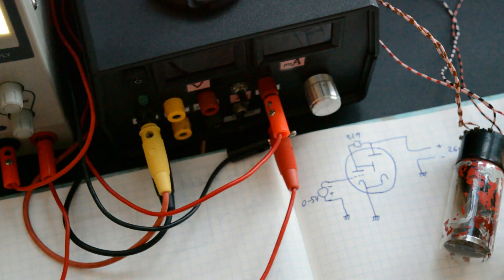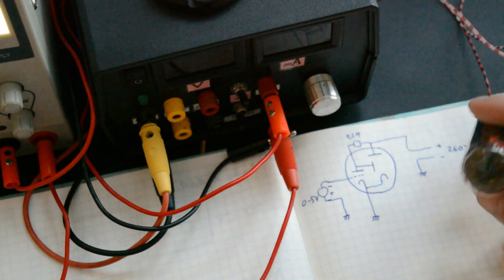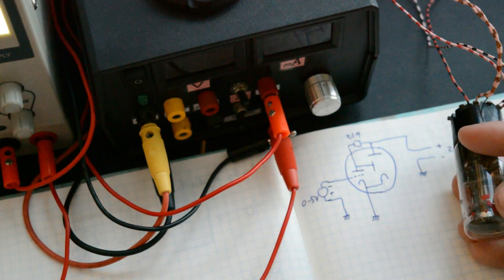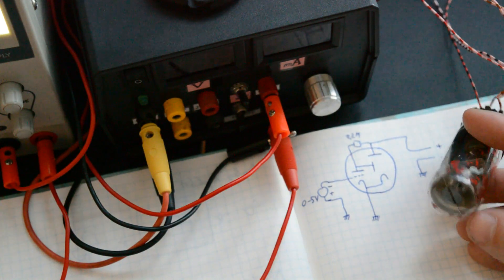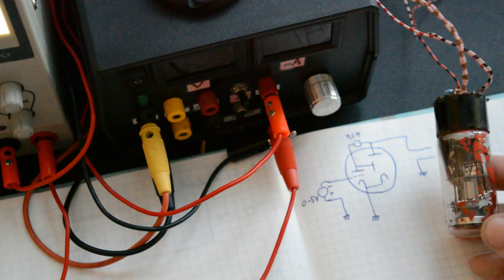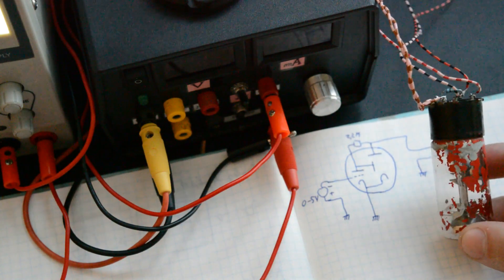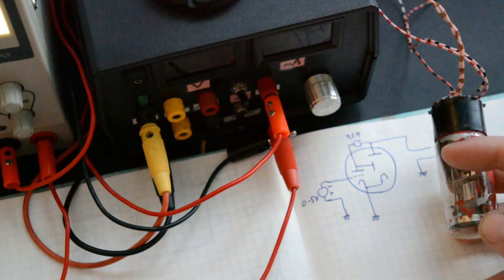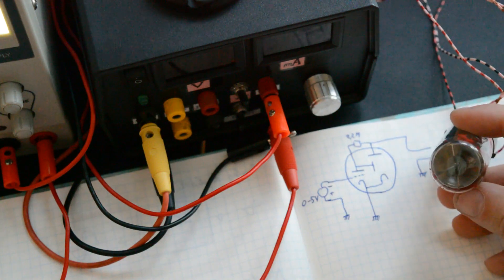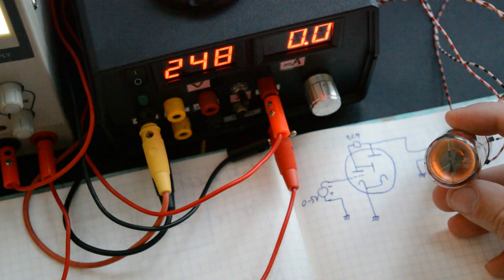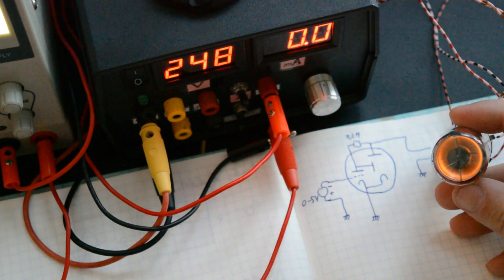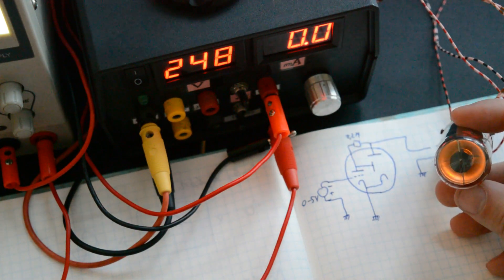But where does the term magic eye come from? The easiest way of explaining this is by showing you a very early type of magic eye tube. This is the EM-1 that I got here, still a functional tube, although most of the paint is missing. I just want to show you what this looks like when it's turned on.